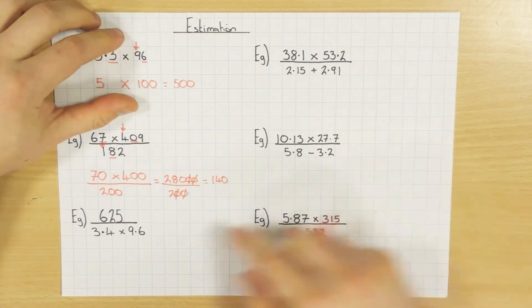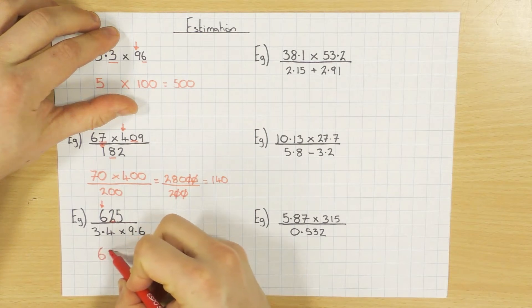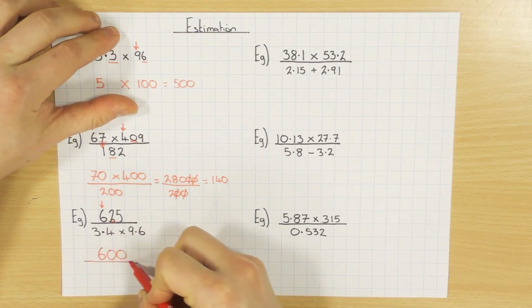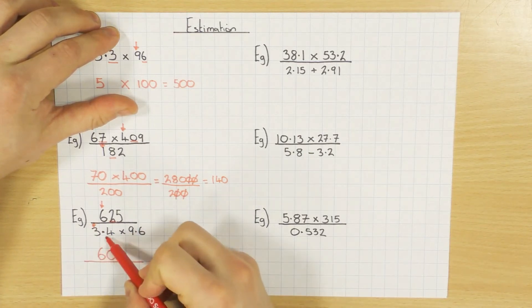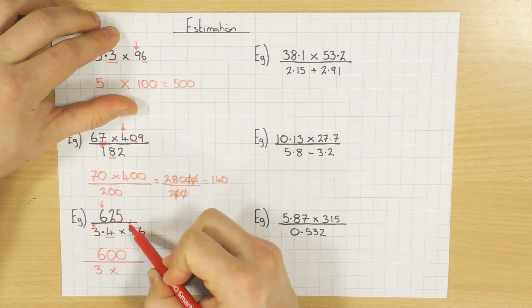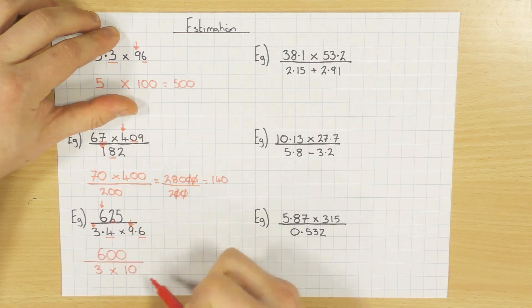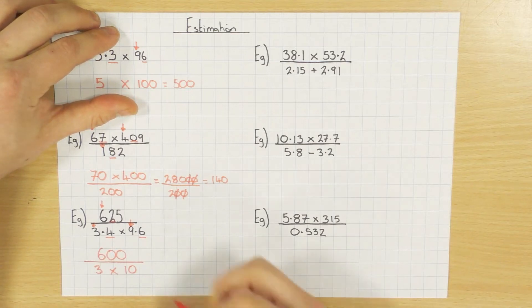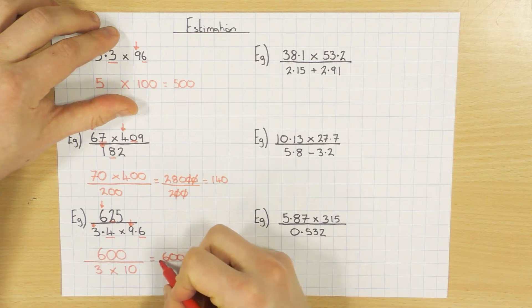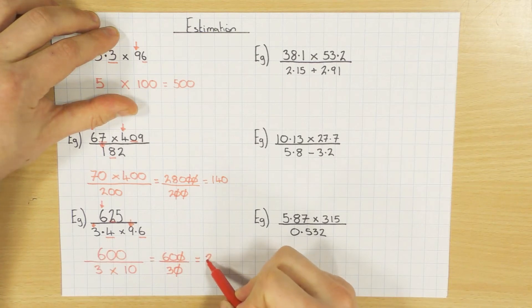Next example: 625 divided by 3.4 times 9.6. For 625, the first significant figure is 6. The 2 tells me to round down, so it stays as 600. For 3.4, the 3 is the first significant figure and 4 tells me to round down, so it stays as 3. For 9.6, 9 is the first significant figure and 6 tells me to round up, so it becomes 10. So we have 600 divided by 3 times 10. 3 times 10 is 30. Cancel a zero top and bottom, leaving 60 divided by 3, which is 20.